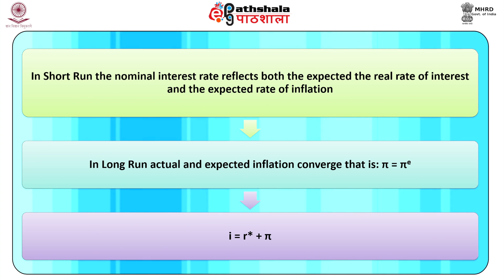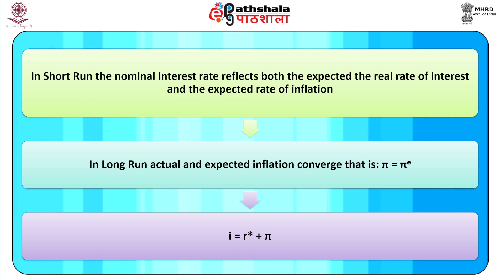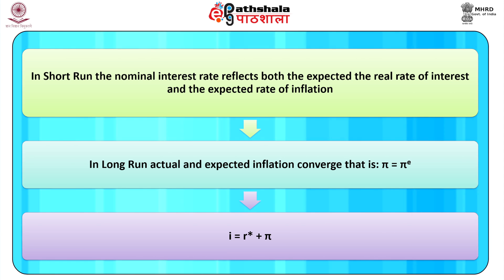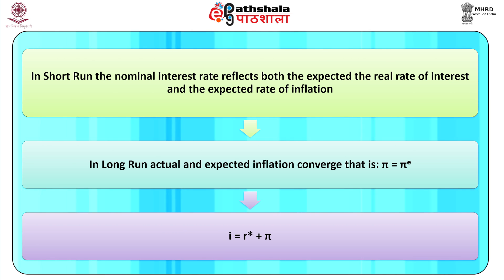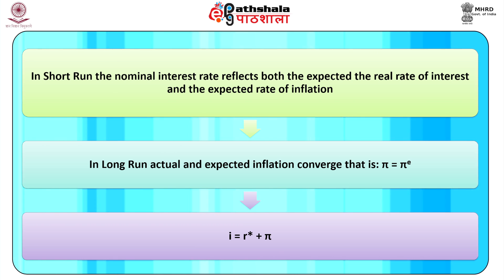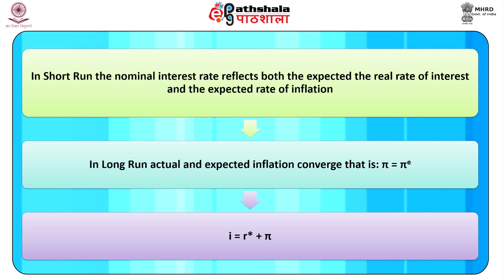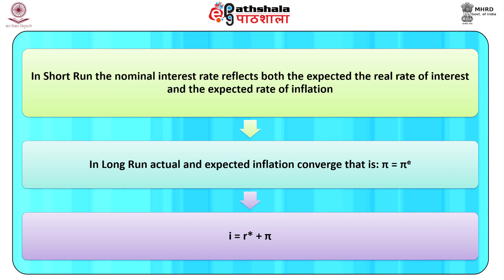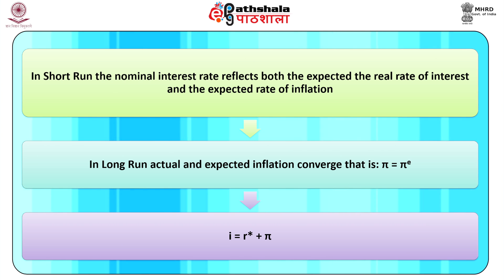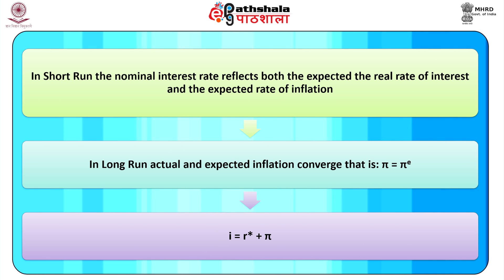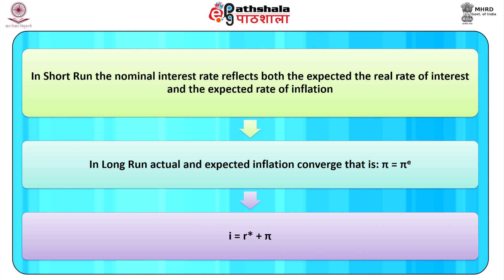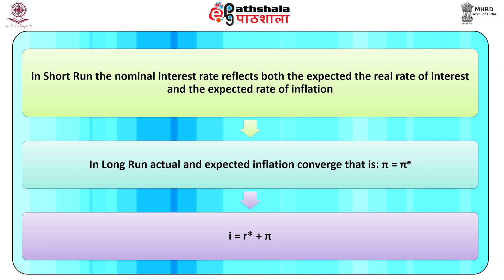The equation implies that in the short run the nominal interest rate reflects both the expected real rate of interest and the expected rate of inflation. But in the long run, the real rate of interest returns to the full employment level R*. Also, in the long run the actual and expected inflation converge, that is inflation equals expected inflation. Thus, the nominal rate equals R* plus inflation.